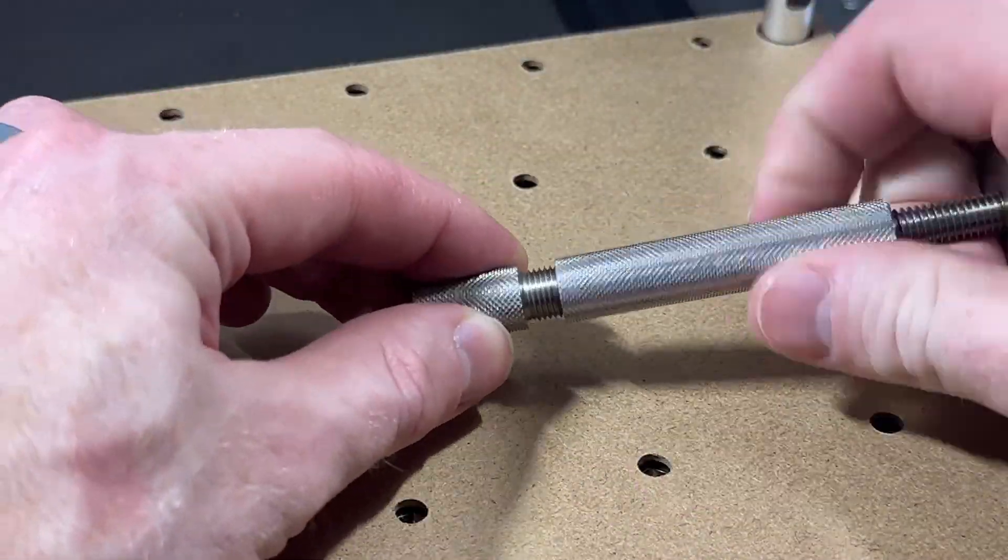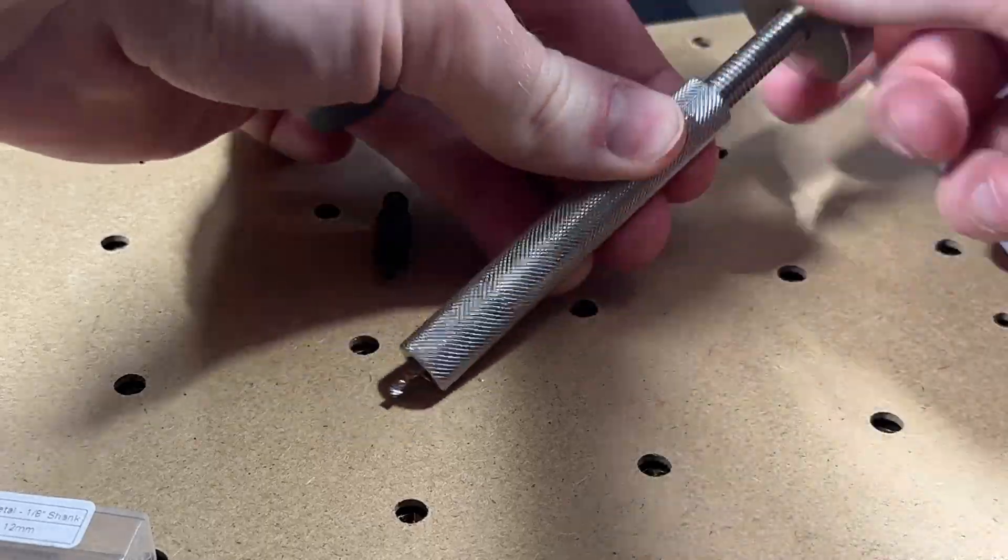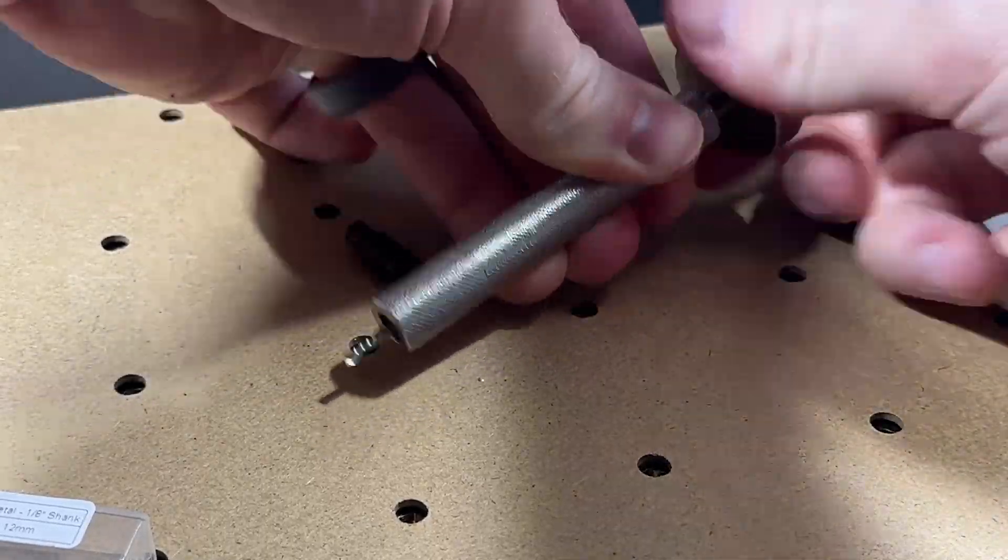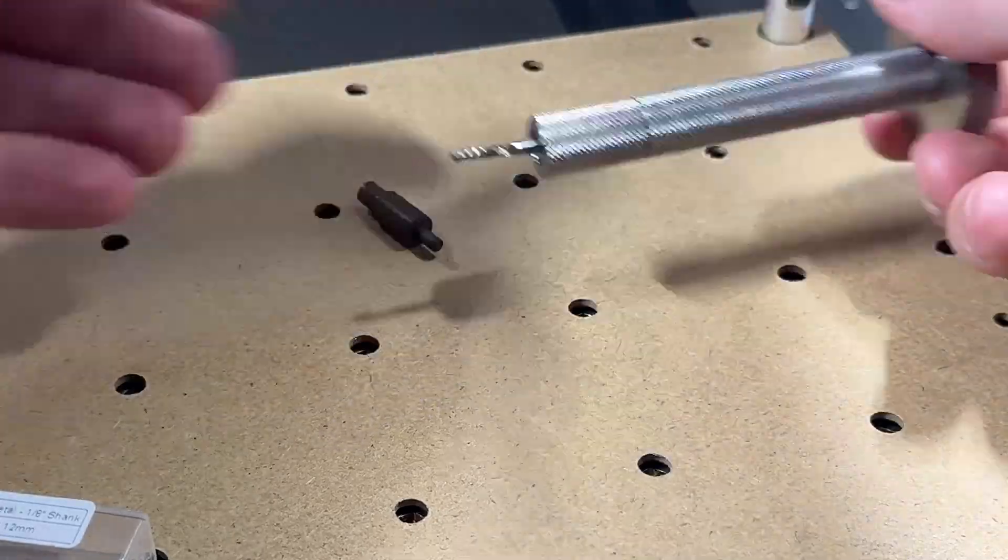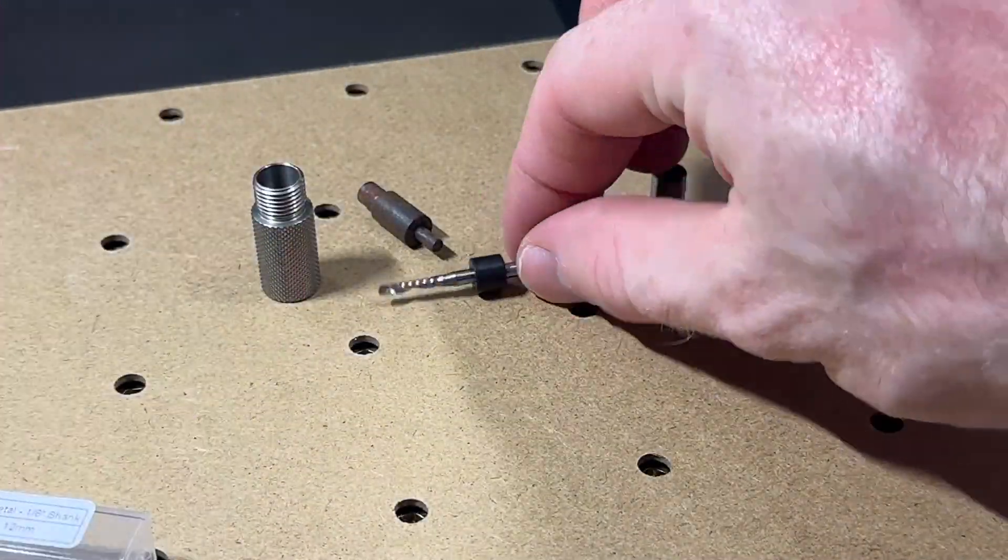You can install and remove bit collars using the bit collar installation tool included in the toolkit for the Carvera Air. These bit collars can also be purchased in our store and installed on bits sourced from anywhere that you'd like.